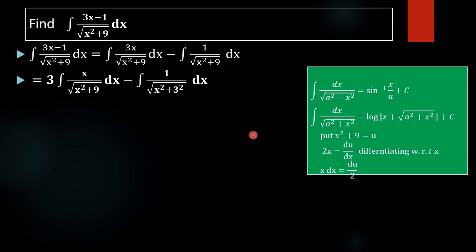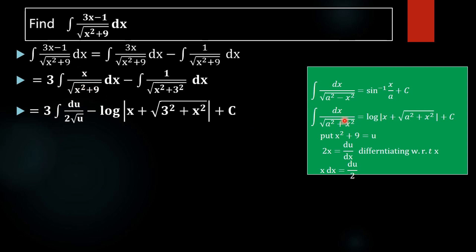Applying the substitution, square root of x squared plus 9 becomes square root of u, and x dx becomes du by 2. So we get 3 times integral of du by 2 root u. This gives us log mod x plus square root of 3 squared plus x squared plus c.